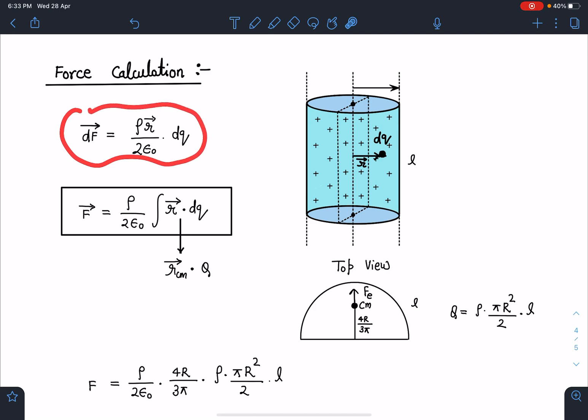dF force on that dq charge I can write as ρr by 2ε₀ times dq. Total force I can write ρ by 2ε₀ times integral r dq. Now this definition is resembling the center of mass definition where we evaluate integral r dm. Here we are having r dq so we can just replace this with r_cm times charge in the part where cm has to be calculated.